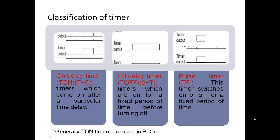Classification of timers: on-delay timer TON, off-delay timer TOFF, and pulse timer TP which is shown in the figure. Generally TON timers are used in PLCs. Timers which come on after a particular time delay is TON. Timers which are on for a fixed period of time before turning off is TOFF delay timer, and timers which are on or off for a fixed period of time is pulse timer.